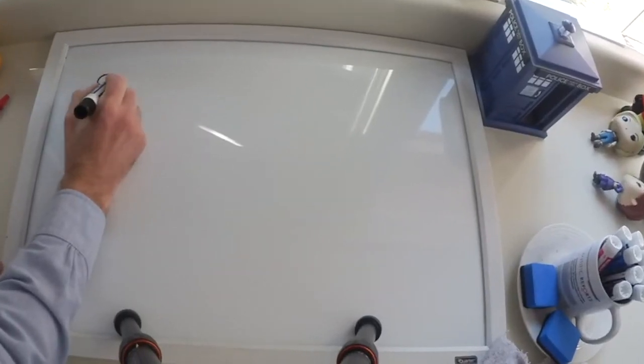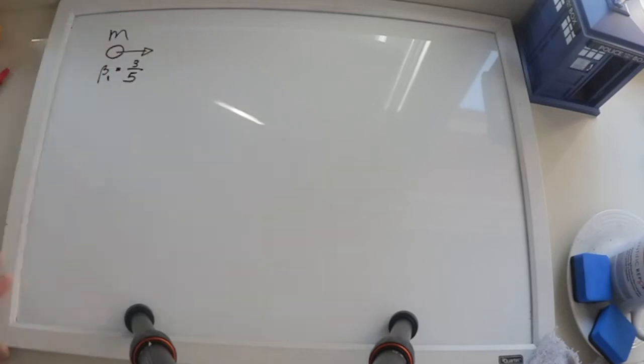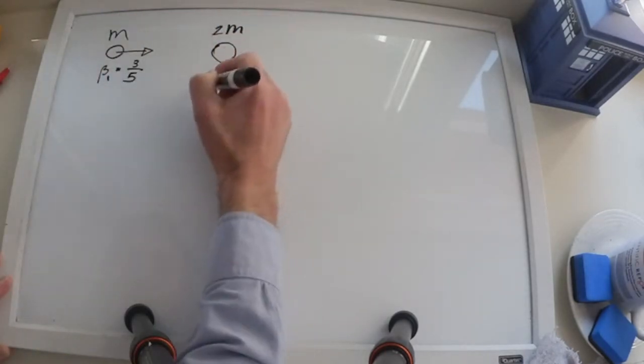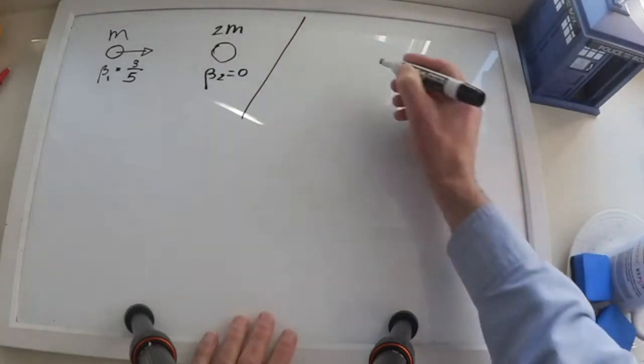Let's see an example of an elastic collision between two particles. Particle 1 with mass m has a beta of 3/5 in the x-axis. Particle 2 with a mass of 2m is at rest.